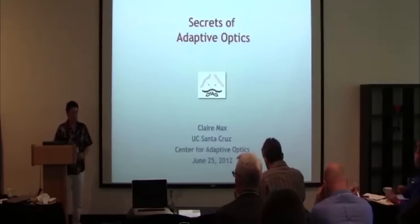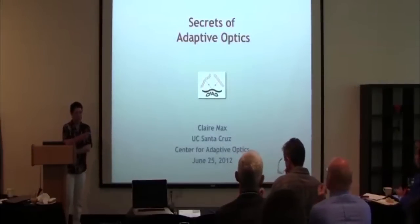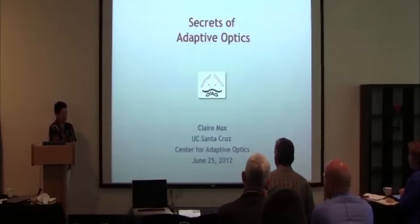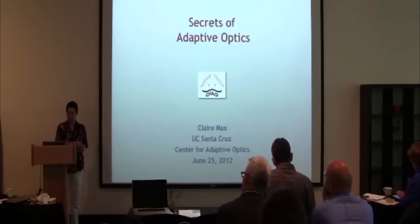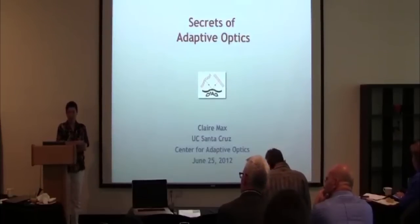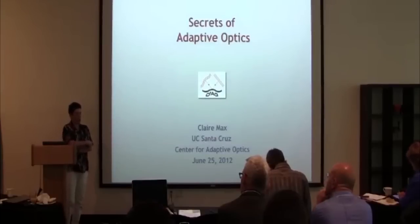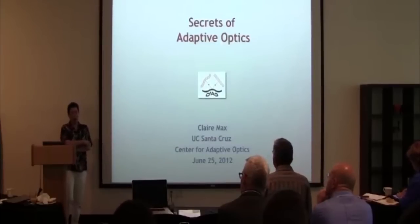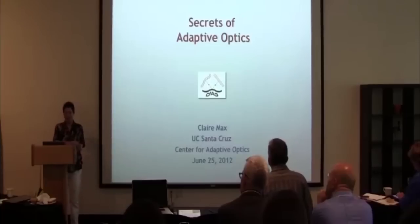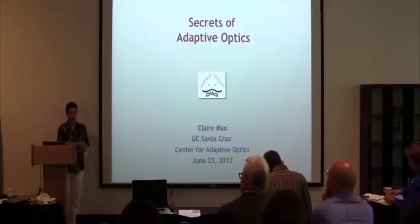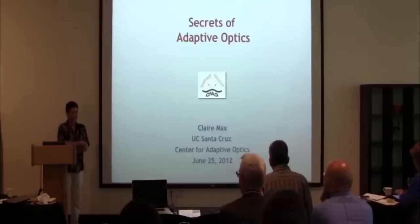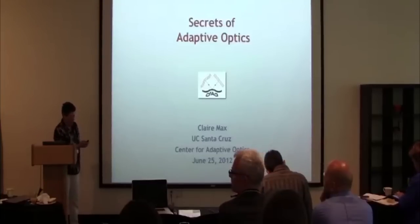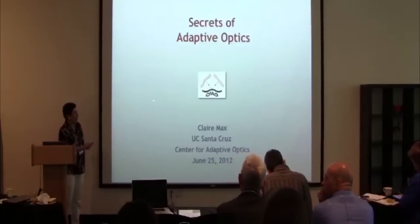I'm going to be talking about adaptive optics, and there are a lot of secrets. One of the ones I'll get to at the very end is applications to human biology and imaging the eye, and perhaps imaging neurons in vivo in living creatures. So that's one of the secrets anyway.